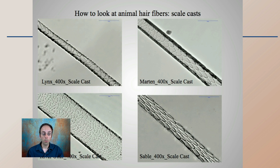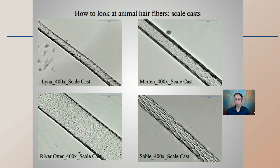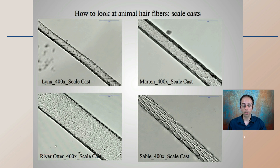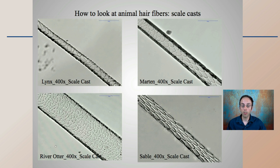For a general comparison, looking at the obvious classification, we can see some very stark differences looking at scale casts and the cuticle region — how some are interlocked with one another, like the scales of a fish interlocked together. The river otter has a little bit more of an irregular pattern. Just looking at these four images, we can clearly see some differences.